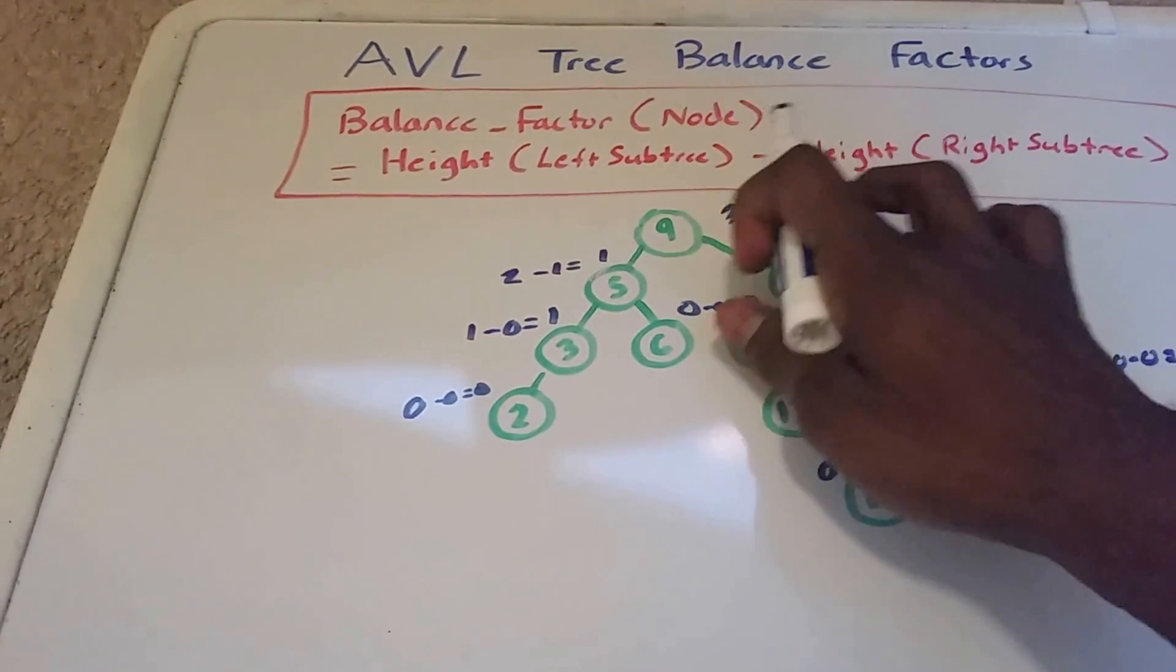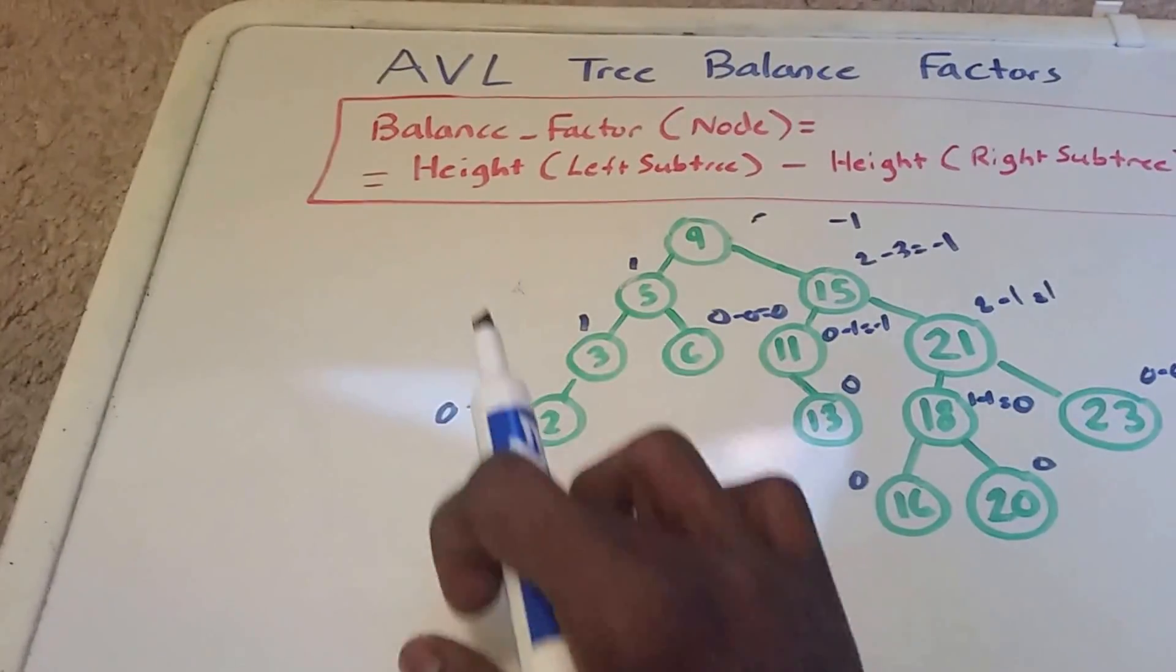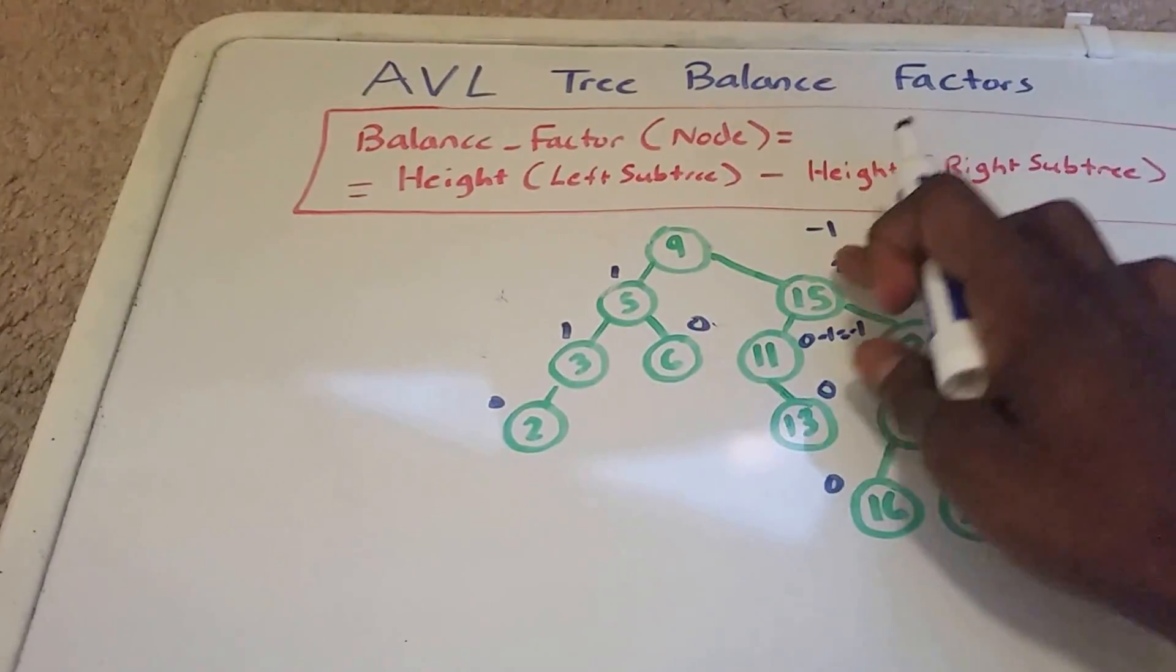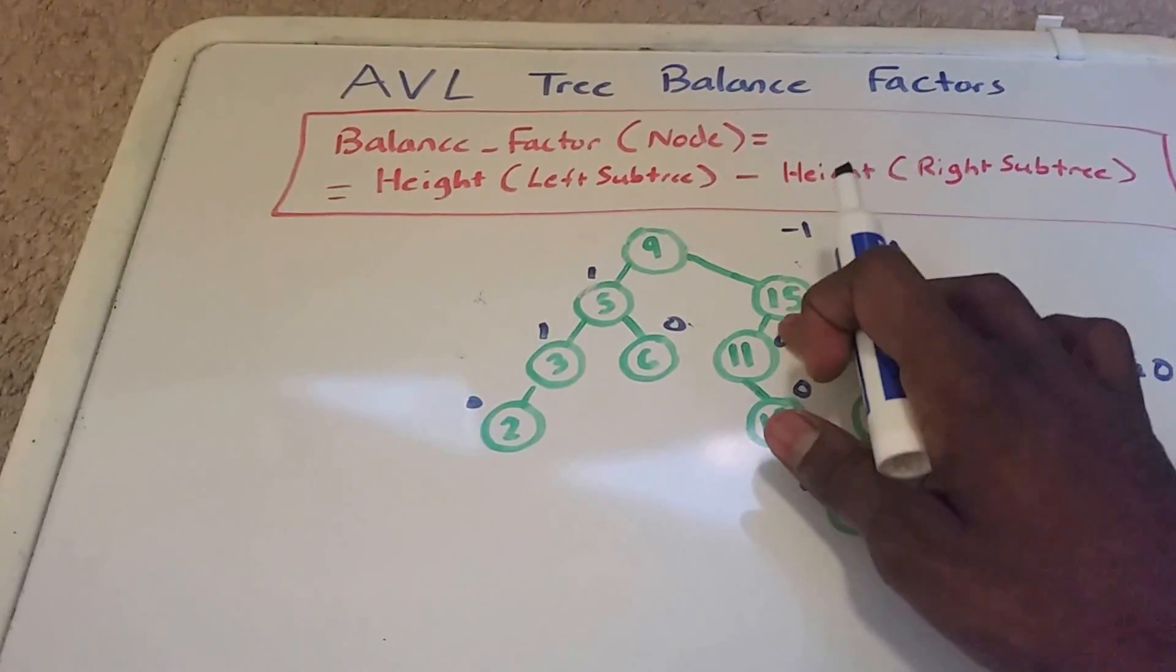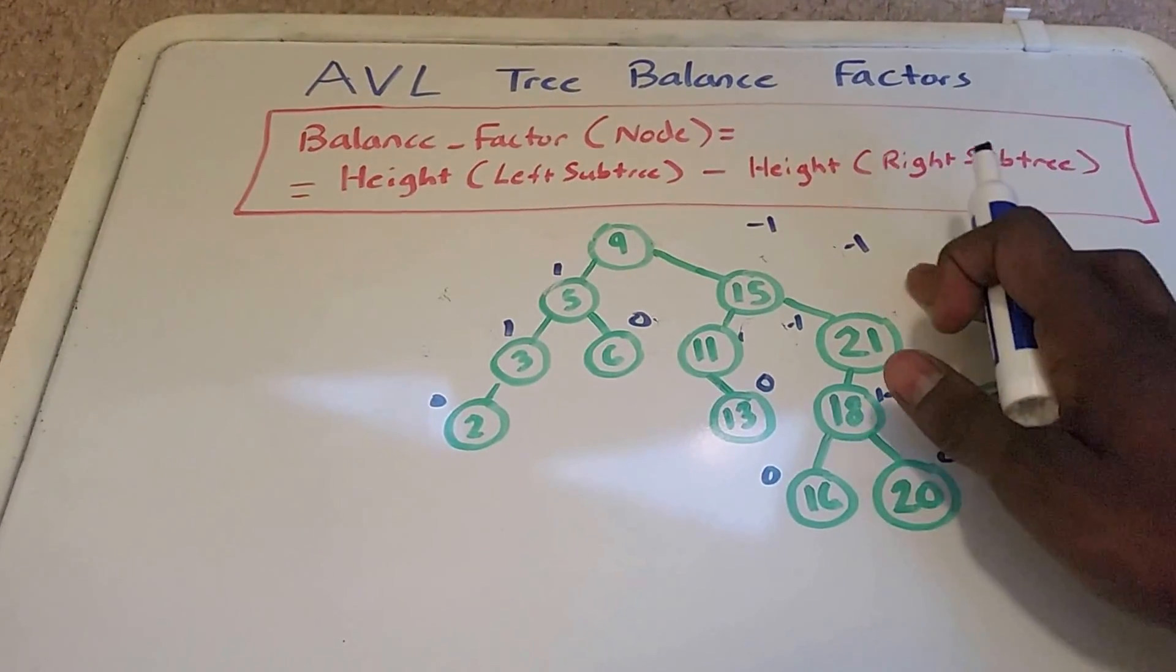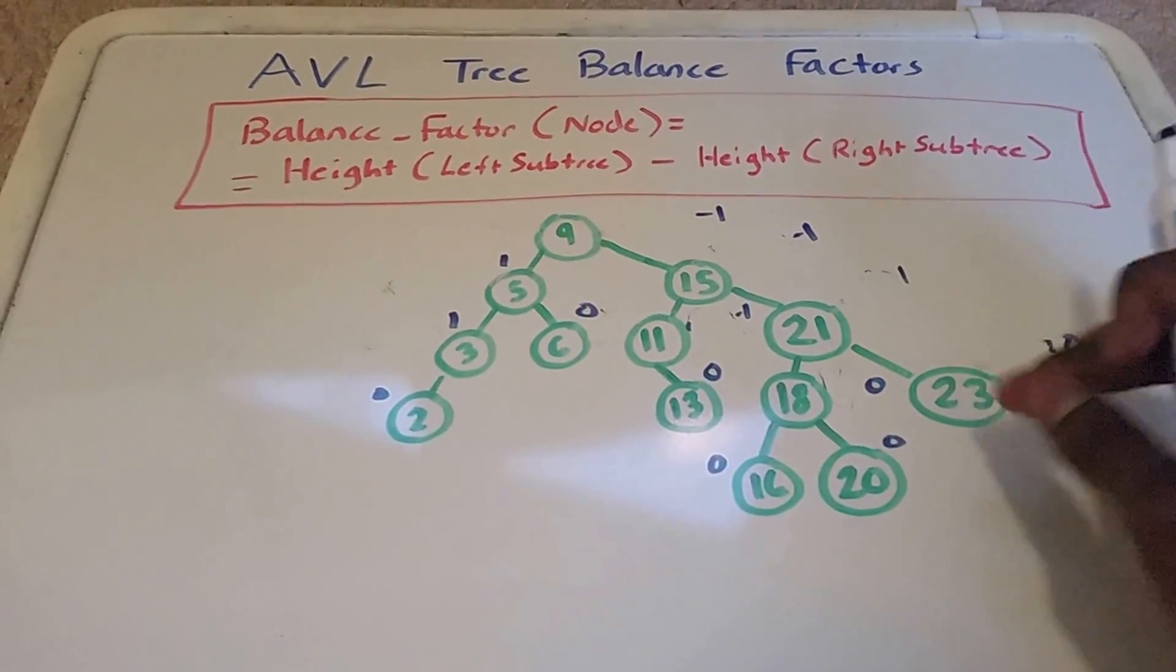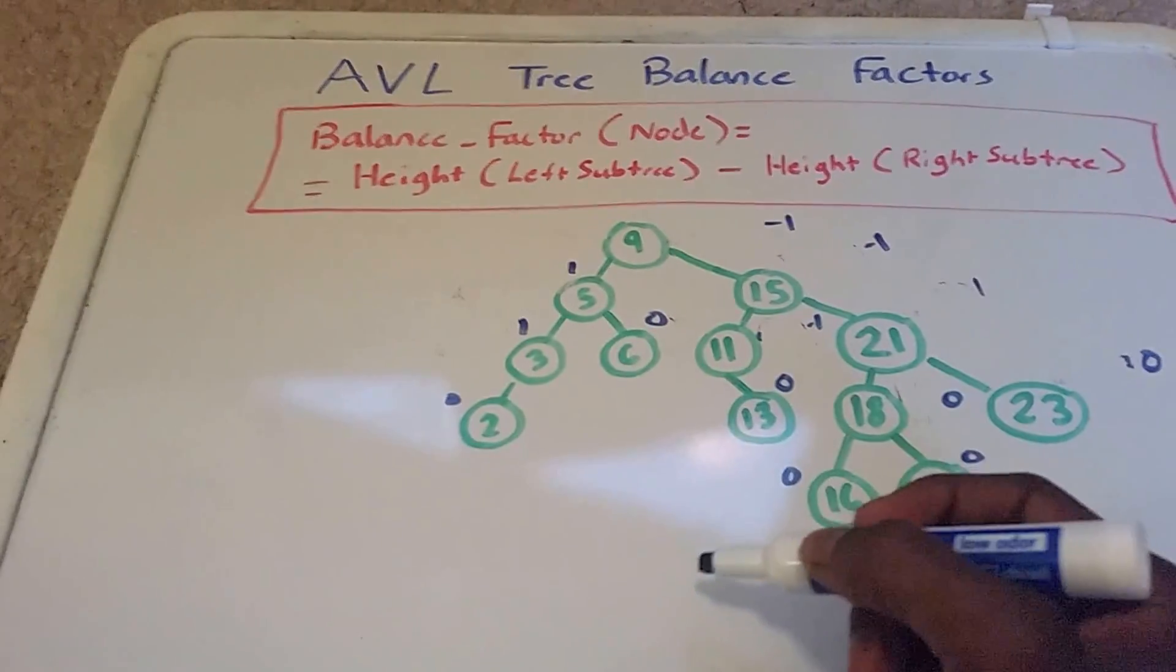So if I'm correct here, we should see negative 1, 1, okay 1, 0 and 0. And let's see here, so here's negative 1, and negative 1 here, 1 here, and 0. So this should be a balanced tree already, and 0. And it looks like it is. So none of these nodes differ more than 1.